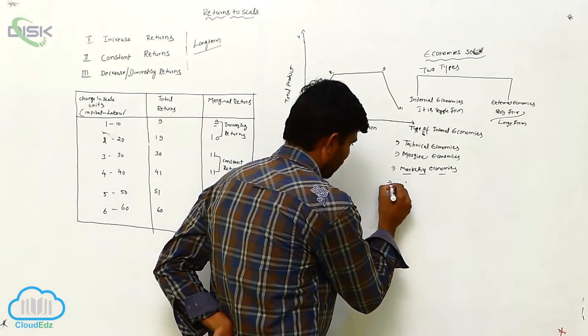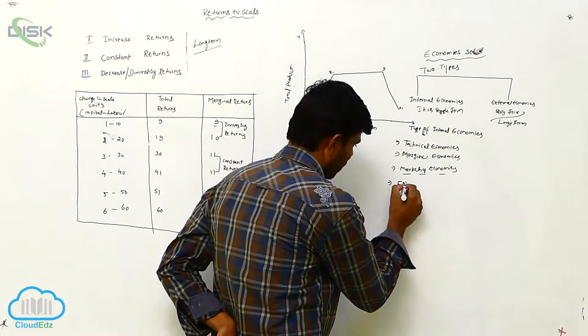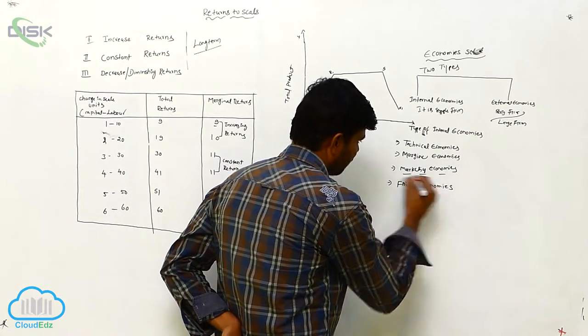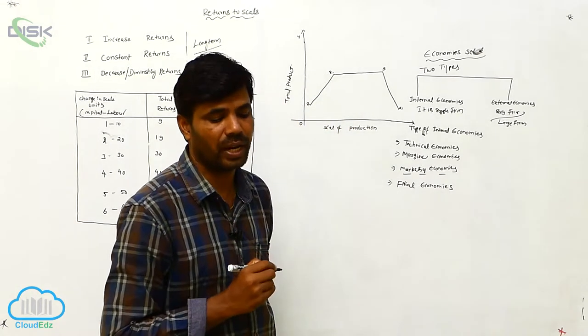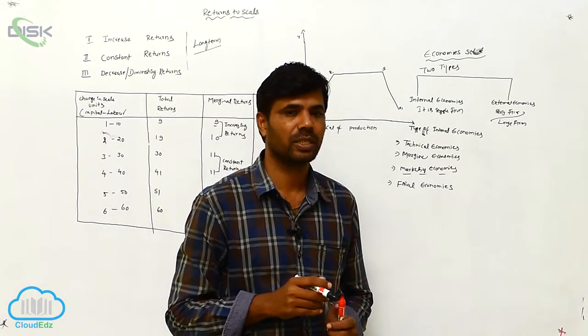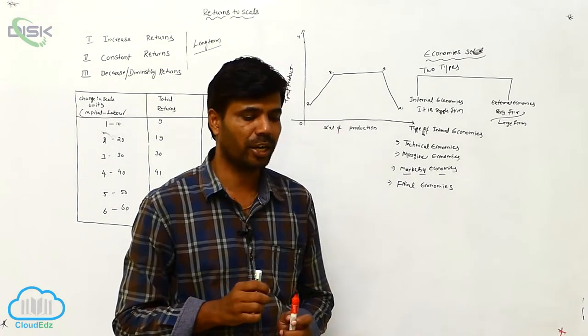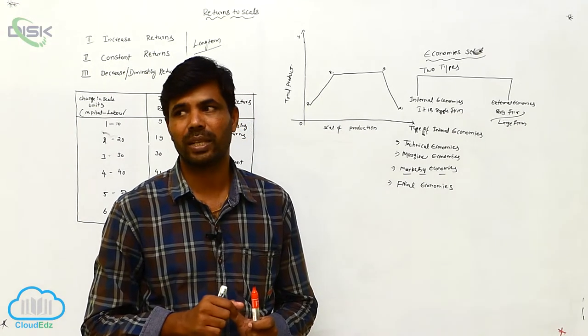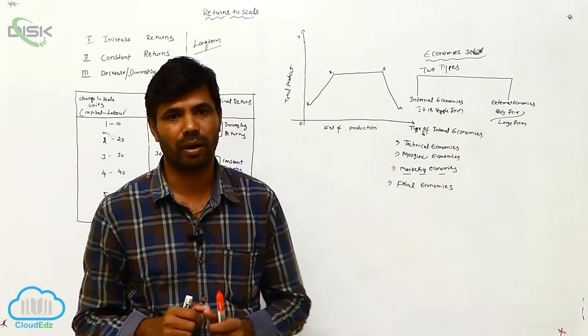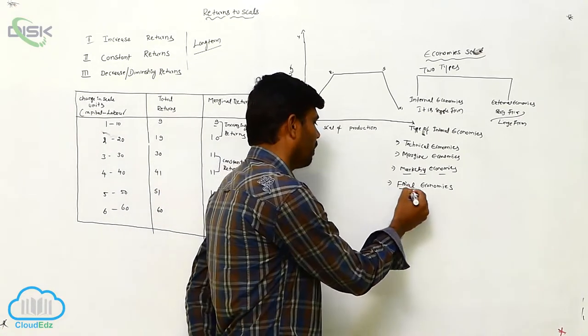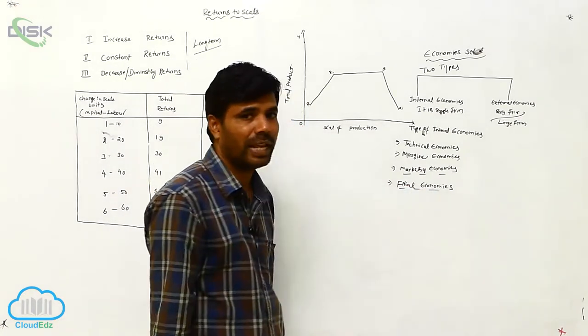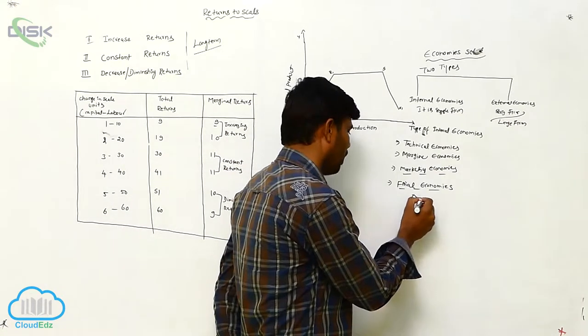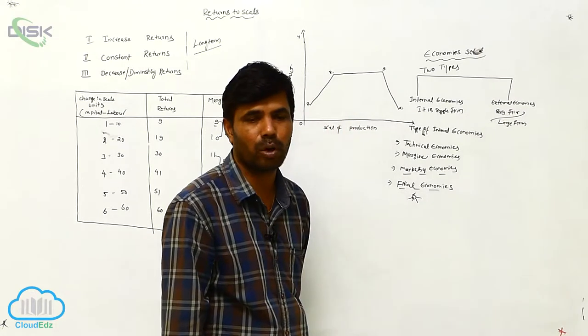Financial economics. Financial economics is reducing the cost of production to get the maximum profit from that. See, suppose I am saying one example, you take a small example in an organization. From that organization we have different departments.